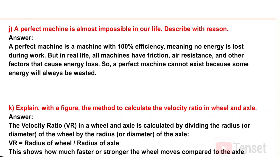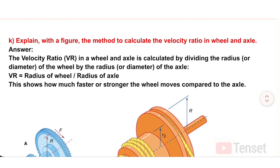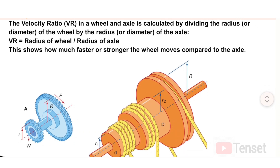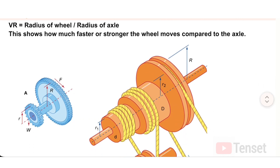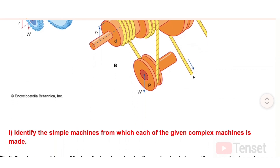K) Explain the method to calculate the velocity ratio in wheel and axle. Answer: The velocity ratio (VR) in a wheel and axle is calculated by dividing the radius (or diameter) of the wheel by the radius (or diameter) of the axle. VR = Radius of wheel / Radius of axle. This shows how much faster or stronger the wheel moves compared to the axle.